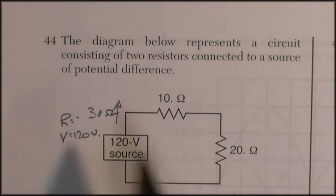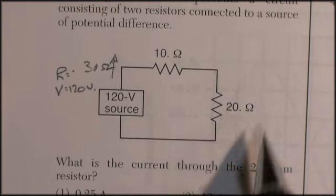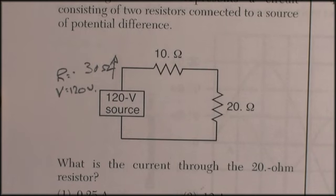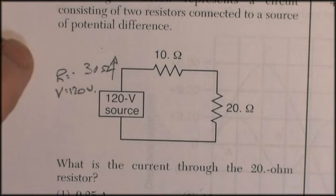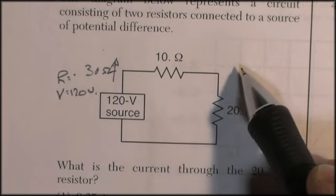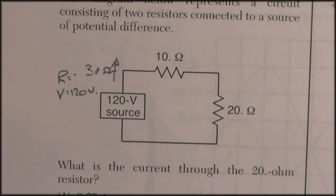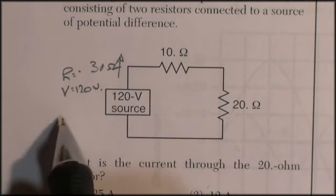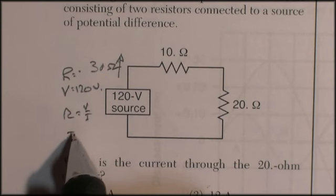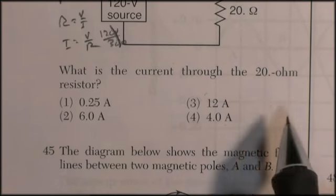The voltage is 120 volts, and the question is asking what's the current through the 20 ohm resistor. The current through one resistor is going to be the same as the current through the other. In a series circuit, the current in one place is equal to the current in another place. Current is a flow, and there's no other place for it to go. We know that resistance equals voltage divided by current, so current equals voltage divided by resistance: 120 volts divided by 30 ohms. I'm looking for about 4 amps, and that looks like choice 4.